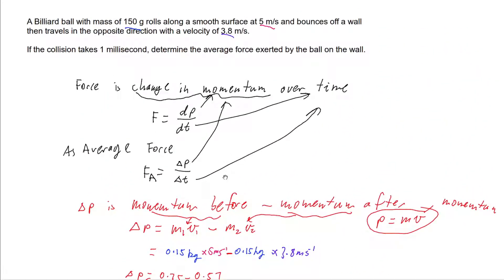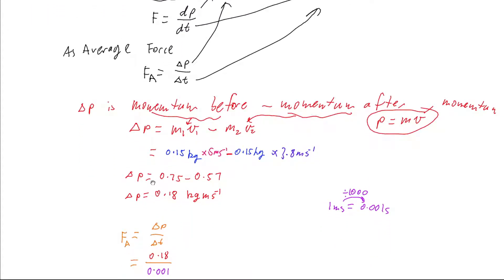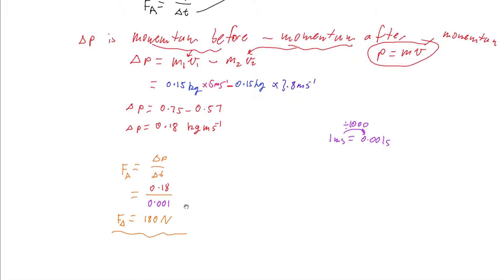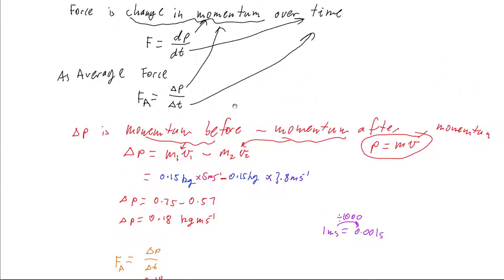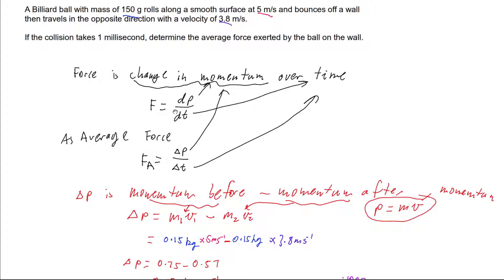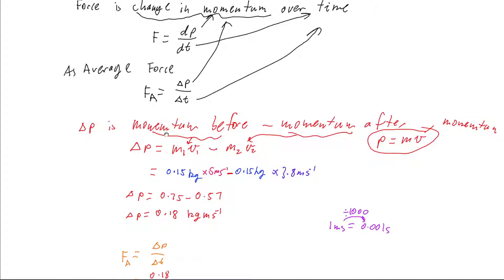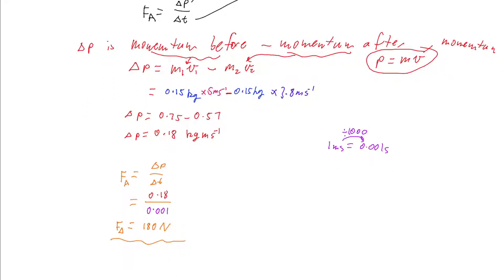So there we have it. For our ball that was rolling along a smooth surface, bounced off a wall, changed velocity, the force that was applied by the ball to the wall, the average force over that time was 180 newtons. And we got there through thinking about what average force means in terms of momentum and using the momentum formula and developing ourselves a formula for change in momentum for our more discrete situation where we've got momentum before minus the momentum after. Plug that in and we get our answer.